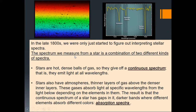The spectrum we measure from a star is a combination of two different kinds of spectra. Stars are hot, dense balls of gas, so they give off a continuous spectrum — they emit light at all wavelengths, like the white light we receive, where we see all seven colors. The stars also have an atmosphere — thinner layers of gas above the denser inner layers. These gases absorb light at specific wavelengths depending on the elements present, creating gaps in the continuous spectrum. These are absorption spectra.